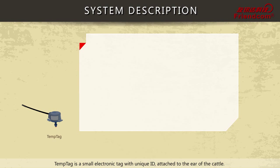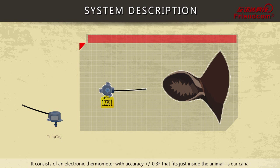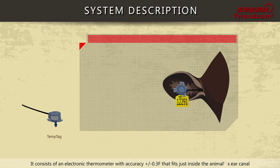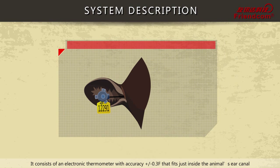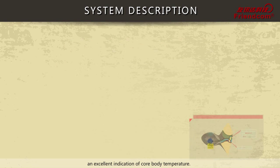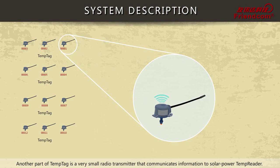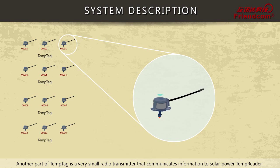The Temp Tag is a small electronic tag with a unique ID, attached to the ear of the cattle. It consists of an electronic thermometer with accuracy of ±0.3°F that fits just inside the animal's ear canal, adjacent to the tympanic membrane. Temp Tag measures the external ear canal temperature, which is an excellent indication of core body temperature. Another part of Temp Tag is a very small radio transmitter that communicates information to a solar-powered Temp Reader.